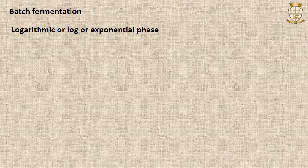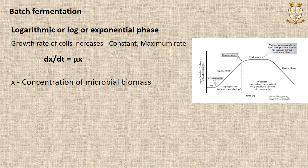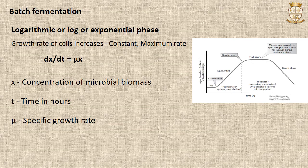Following the lag phase, the logarithmic or exponential phase ensues. This is the period during which the growth rate of cells gradually increases and the cells grow at a constant and maximum rate possible. The exponential phase may be described as dx/dt = µx, where x is the concentration of microbial biomass, t is the time in hours, and µ is the specific growth rate.